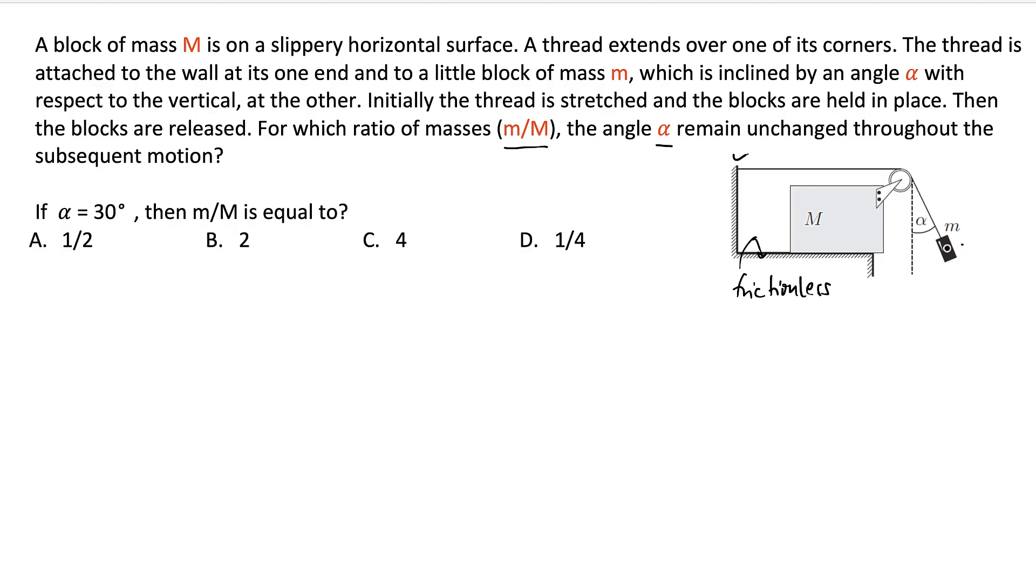So when you leave this thing, then the motion will start. But we need to find the ratio of m by M such that this alpha remains constant. It never changes. So that's the question.